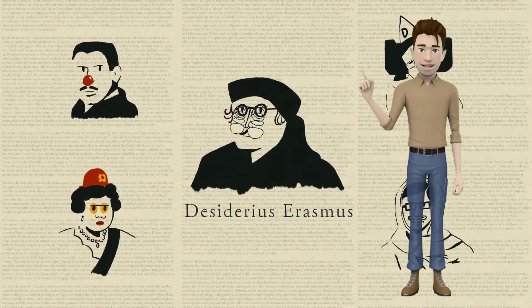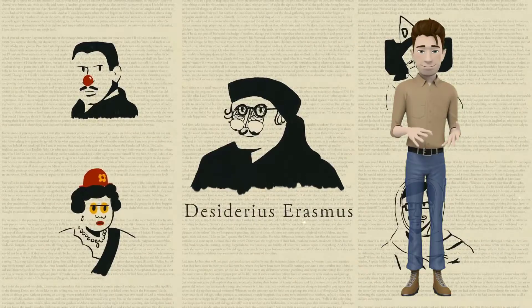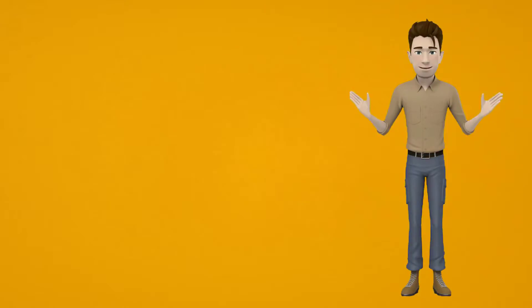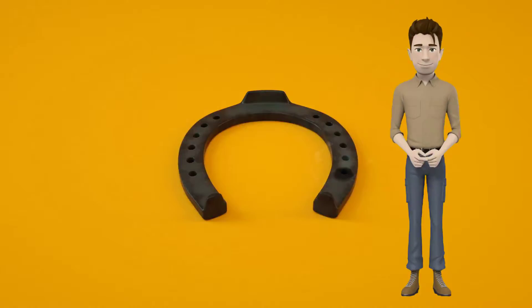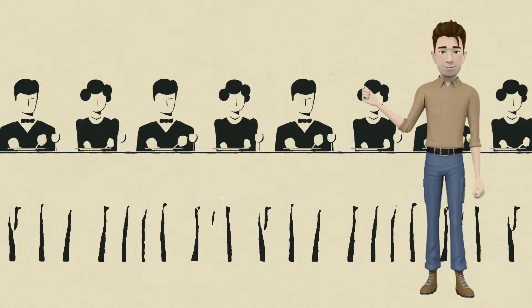However well-schooled he himself was, Erasmus remained, he insists, as much of a nitwit as anyone else. His judgement is faulty, his passions get the better of him, he is prey to superstition and irrational fear, he is shy whenever he has to meet new people, he drops things at elegant dinners.